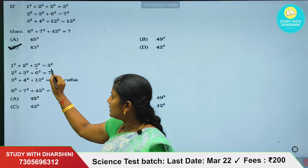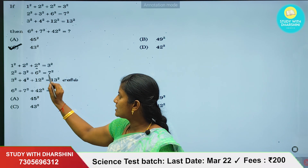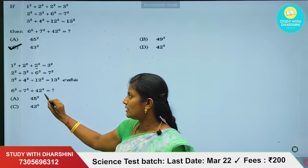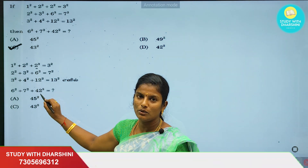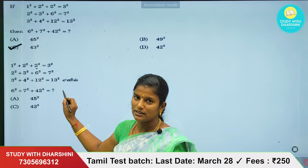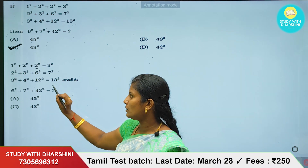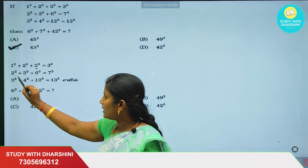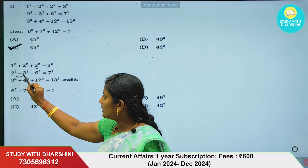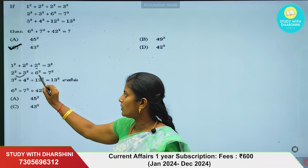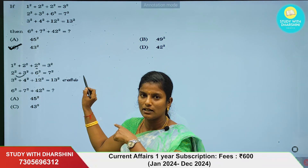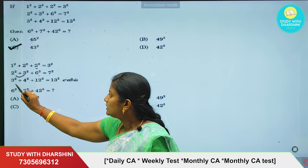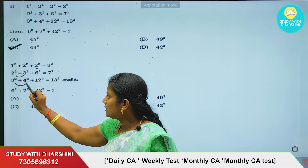So following the pattern: 2, 3, 6, 7 — then 12, 13 — then 42, 43. The sequence follows: pairs are 2-3, 3-4, continuing the pattern.